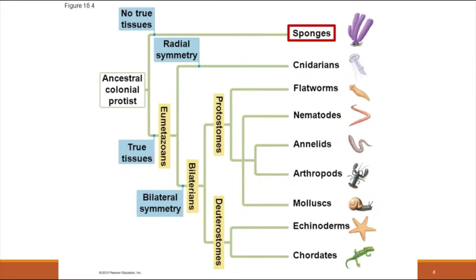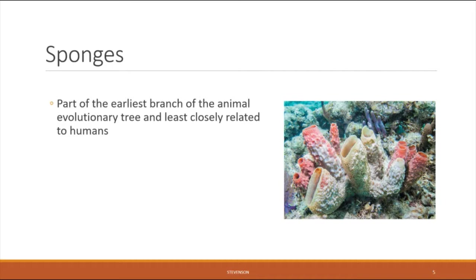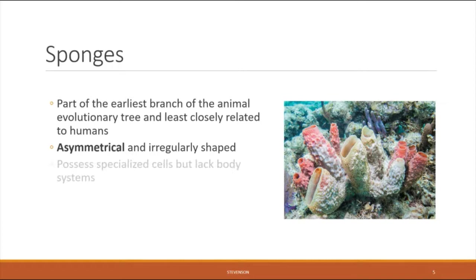We'll start with the most primitive group: the sponges. Sponges are so primitive that you may not even recognize them as animals. They are the earliest branch of the evolutionary tree of animals and, out of all animals, this group is least closely related to humans. Sponges are asymmetrical and irregularly shaped — all other groups of animals have some form of symmetry, but sponges do not. They possess specialized cells but lack proper body systems.